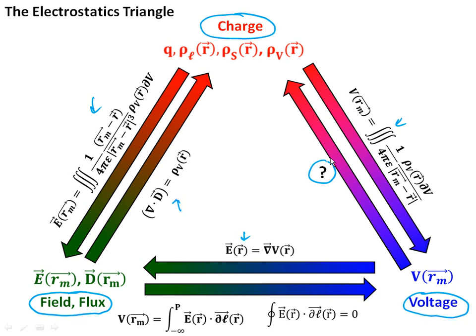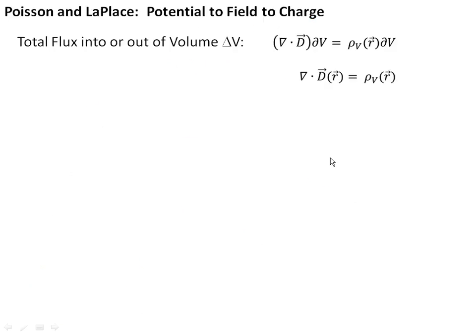We have one piece that's missing, which is to go from the voltage or potential back to a charge distribution. That turns out to be fairly straightforward now that we have the divergence theorem. There we learned that the total flux into or out of some volume element ΔV, as long as ΔV is really tiny so we can do a Taylor series expansion simplification, is given by this expression, and we can represent this by Gauss's law.